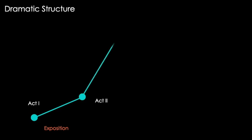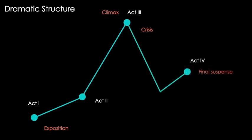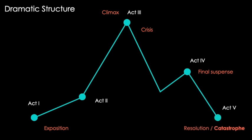Now in Act 2 we're going to see what the consequences of these things are. We'll understand what things have been like in Rome, how they've been feeling about it. We've seen what Octavius and Lepidus feel about Antony's actions, and we're also going to learn about some of the other players in the play. Then obviously we build towards the climax, the crisis, the final suspense, and then the resolution — or in this case, catastrophe.